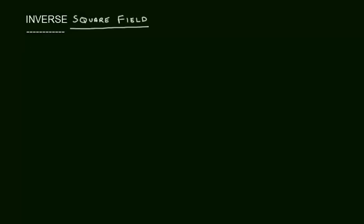An inverse square field is defined as follows: c u-vector over the magnitude of vector r squared, which is also equal to c vector r over the magnitude of vector r cubed, where c is a scalar.